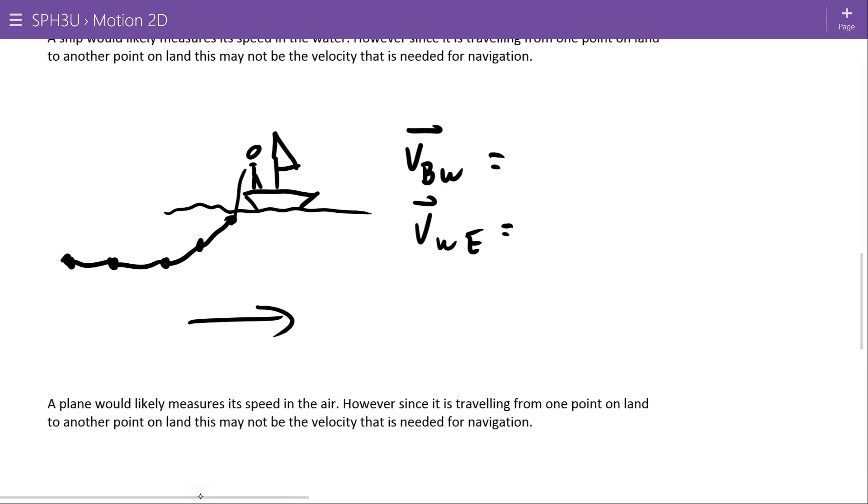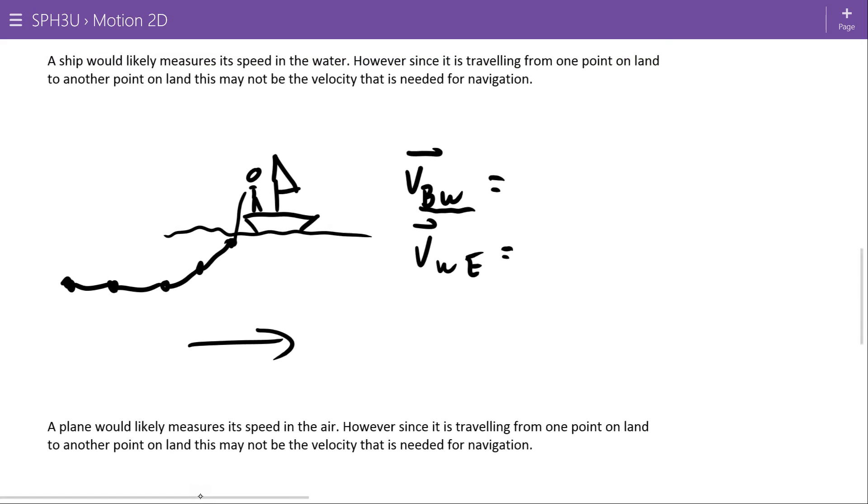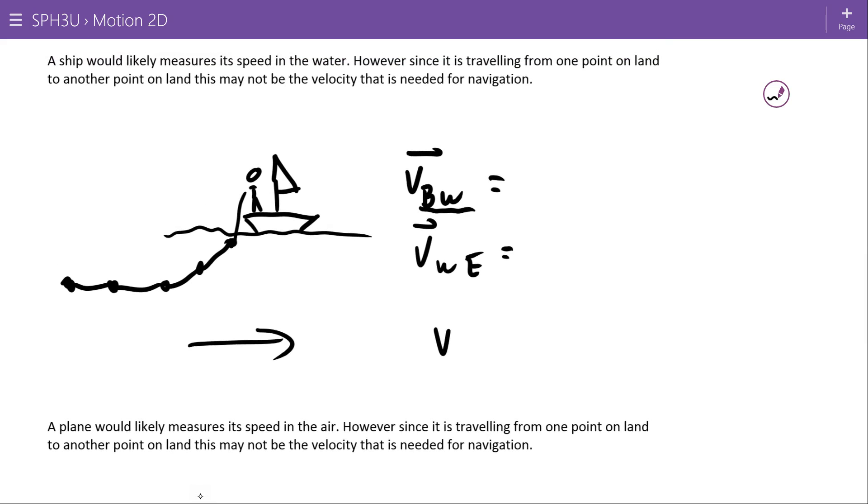Since we don't sail ships from one spot in the water to another spot in the water, but we're interested in going to different points of land, the velocity of the boat relative to the water isn't really what we want. What we really want is we want to get the boat somewhere with reference to the Earth. So we have to take these two velocities and consider them, or add them. So that's one conceptual place where this happens.